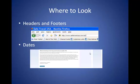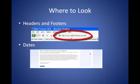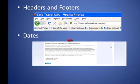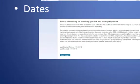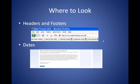So, where do you look on web pages to find the answers to the criteria I've discussed? Headers and footers will provide a lot of the information you need. What is the site's domain name — is it a .com, .org, .gov, .edu, or other type of site? Can you find dates related to the information presented? Can you find information about the author or site sponsor? Use these clues to help you determine whether the site you found is appropriate for you to use.